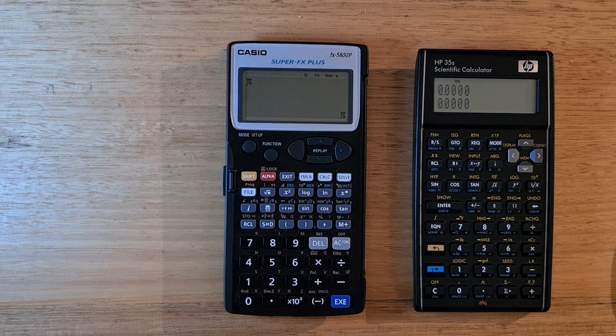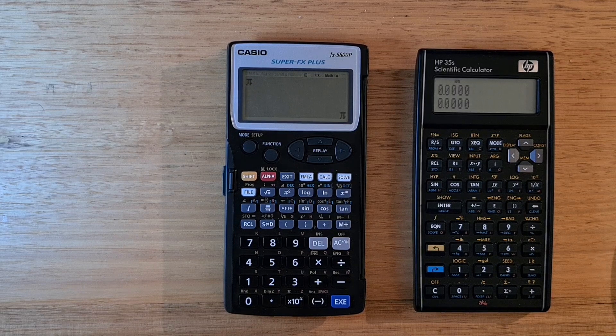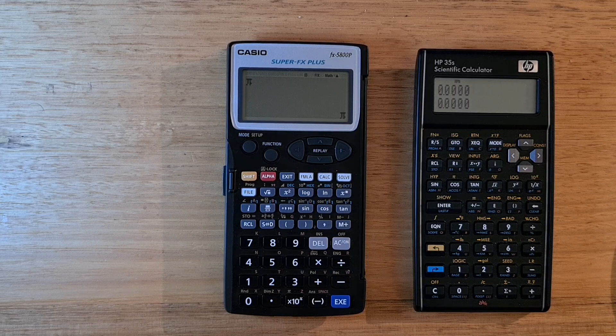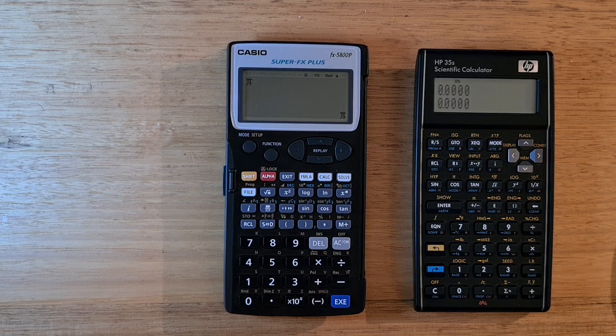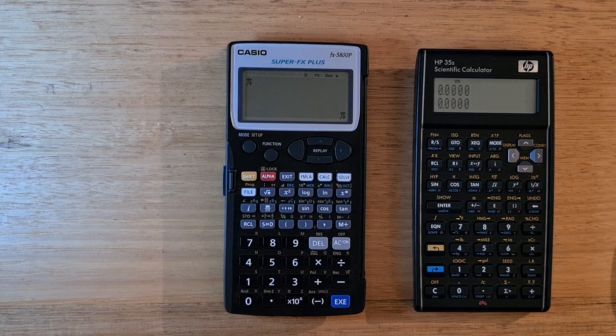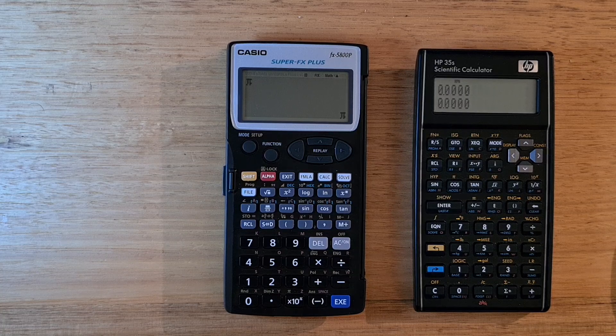So physically at 20 by 8 cm, the 5800P is quite large for a non-graphing calculator, and it's just slightly larger than this HP 35S, which is probably the most comparable calculator on the market currently.